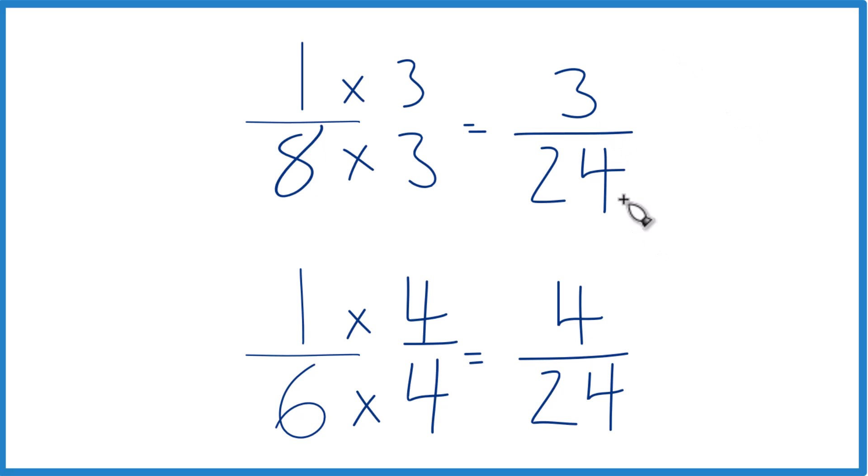Now we can compare our fractions. Same denominator, we look at the numerators. 4 is larger than 3, so 4/24 is larger than 3/24. Only by 1/24, but it's still larger.